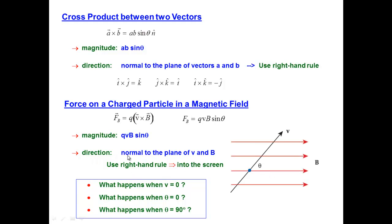The direction is normal or perpendicular to the plane of the velocity vector and the magnetic field. The right-hand rule would tell us that in this picture shown on the slide, the force is into the page.